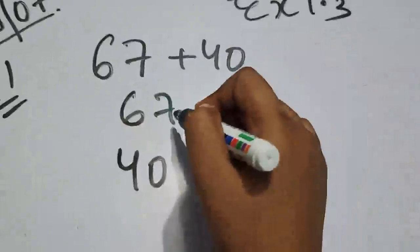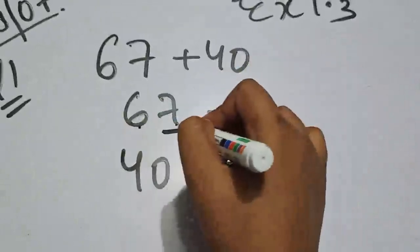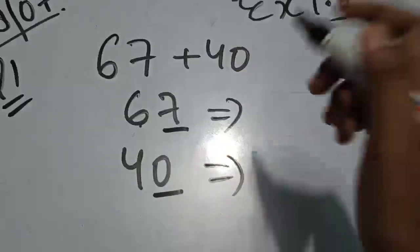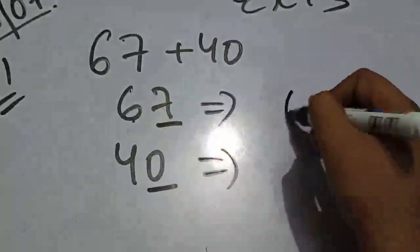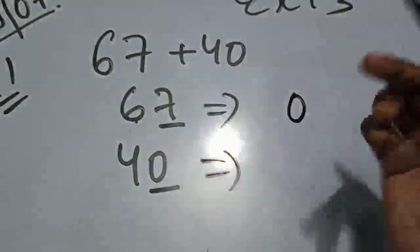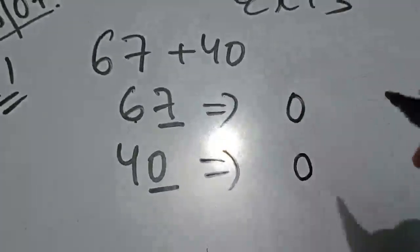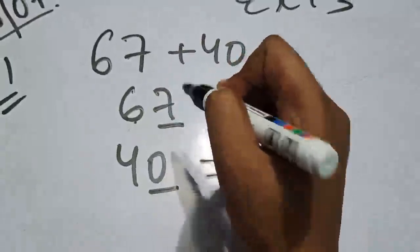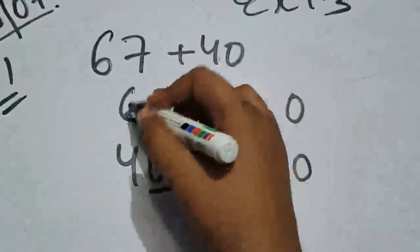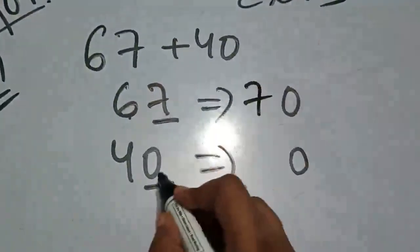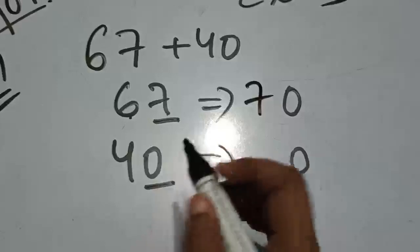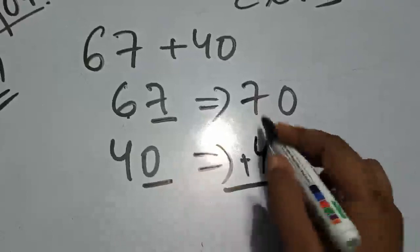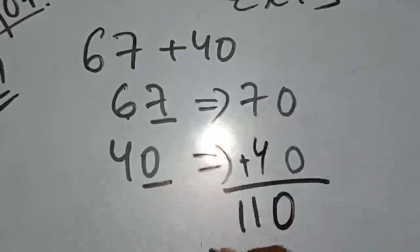Nearest tens کہا ہے۔ Ones کی جگہ 0 لگا دی، اس سے پہلے کوئی value نہیں تھی۔ یہاں بھی 0 تھا 0 ہی رہا۔ کیا underline والی value 5 سے بڑی ہے؟ ہاں ہے — تو 6 plus 1 کر دیا۔ کیا یہ value 5 ہے یا 5 سے بڑی ہے؟ نہیں ہے — تو یہ 4 ہی رہا۔ اب دونوں کا plus نکالنا ہے: 7 plus 4 کتنا ہوا — 11۔ This is your answer.